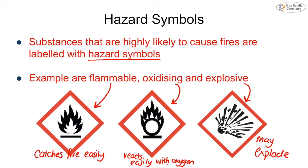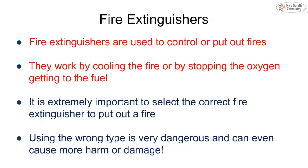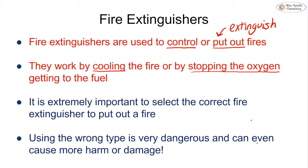If we do have a fire and need to put it out, the best thing is to use a fire extinguisher. Fire extinguishers are used either to control a fire or to completely extinguish it. They do this in one of two ways: by cooling it down — removing the temperature part of the fire triangle — or by stopping the oxygen — removing that part of the fire triangle — and then the fire goes out.